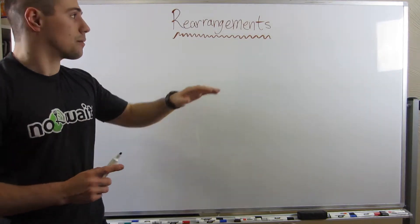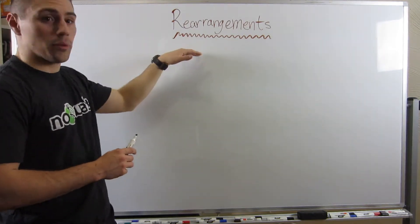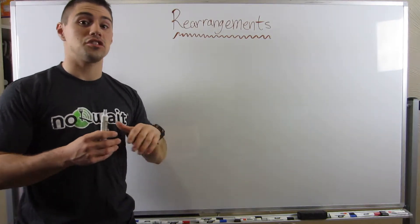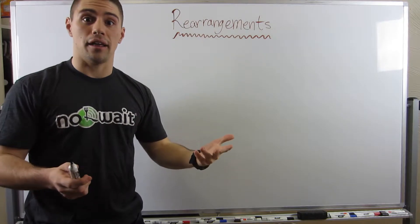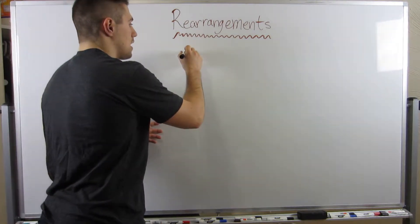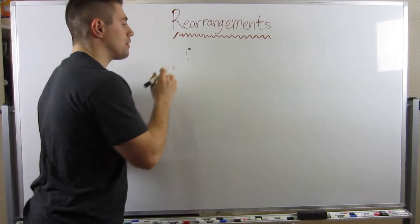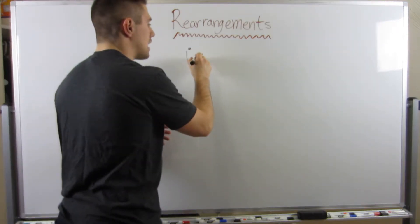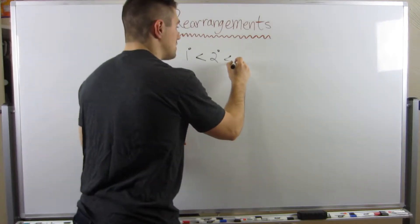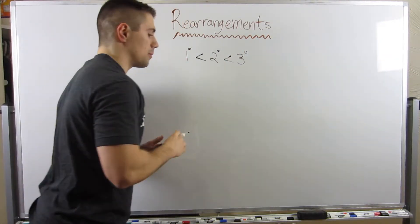We're going to start off with different functional groups in this video series called ethers and epoxides. However, while we will learn new reactions along the way, the first thing we need to talk about are something called rearrangements. This is just going to build on your knowledge of carbocations. Remember what we talked about earlier: primary carbocations are less stable than secondary carbocations, which are less stable than tertiary carbocations.